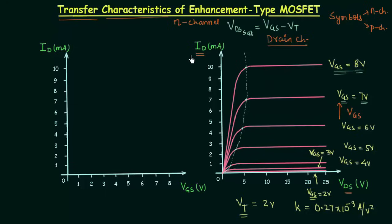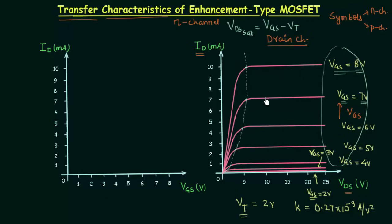The region in which the drain current is constant is known as the saturation region. The region in which the drain current equals zero is the cutoff region. There is also a breakdown region where the drain current increases drastically, but that is not important for us. While defining points on the transfer characteristics, only the saturation levels are employed, limiting the region of operation to the saturation region.